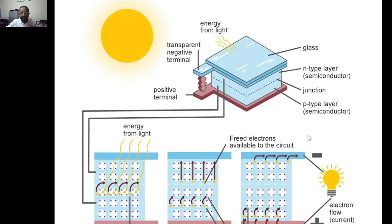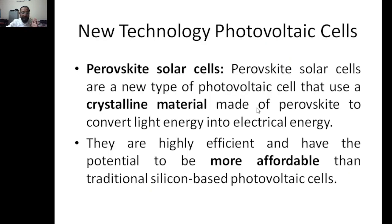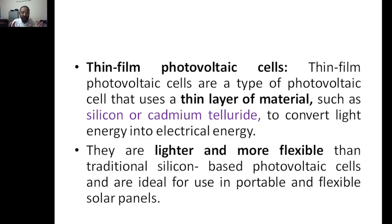New photovoltaic technologies include perovskite solar cells — new types of solar cells that use a crystalline perovskite material to convert light into electrical energy, and are more affordable compared to conventional silicon-based photovoltaics. There are also thin-film photovoltaics, where a thin layer of material such as silicon or cadmium telluride is used. These are lighter and more flexible, making them suitable for portable and flexible solar panels.